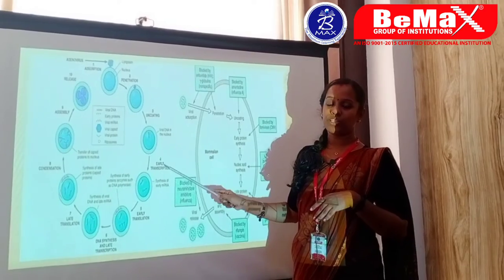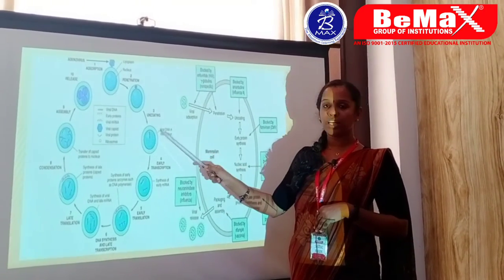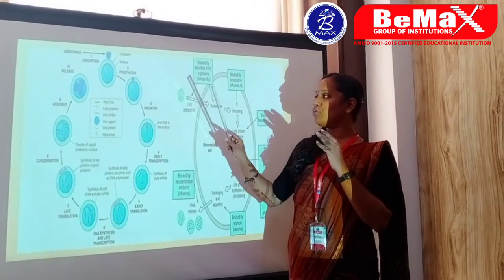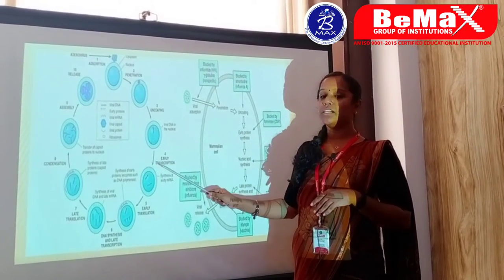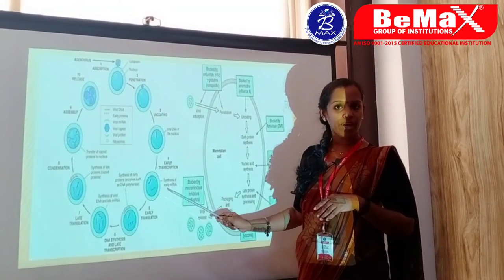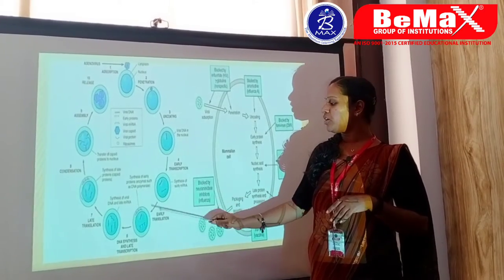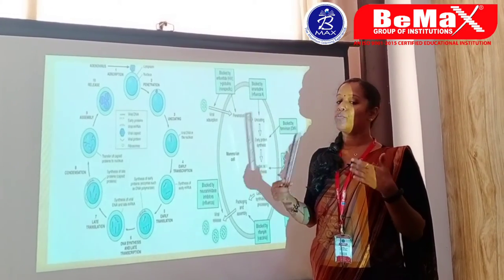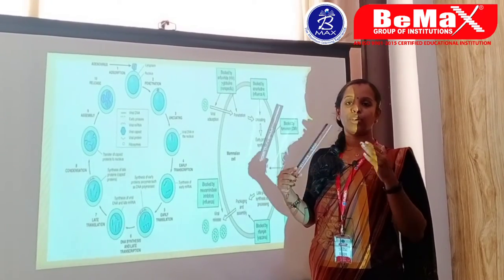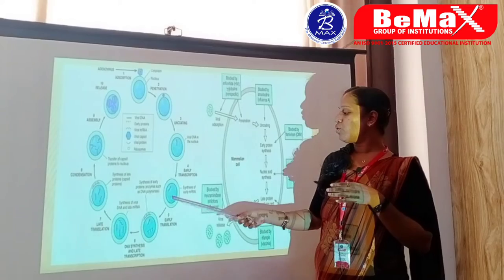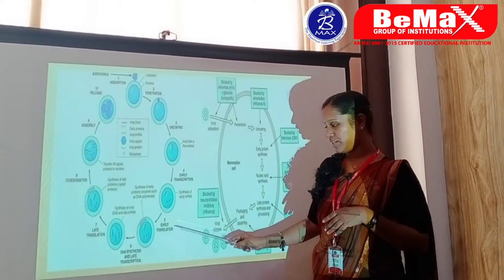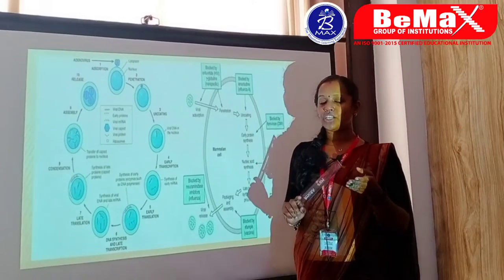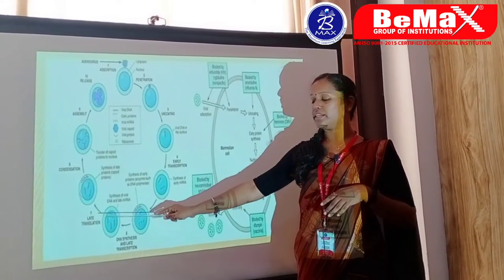The next step is called the early transcription phase, where the viral DNA molecule synthesizes new mRNA molecules — because we need to multiply the viral cells. After that comes the translation phase, where along with the DNA or RNA strands, more proteins and enzymes are synthesized. Then we have the DNA synthesis phase, where single-stranded RNA gets converted to double-stranded DNA.